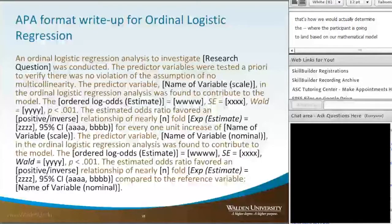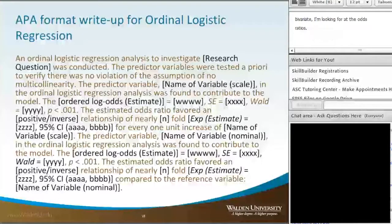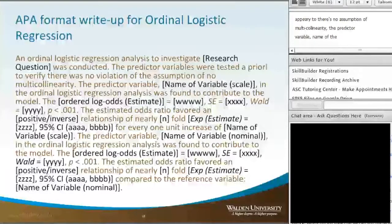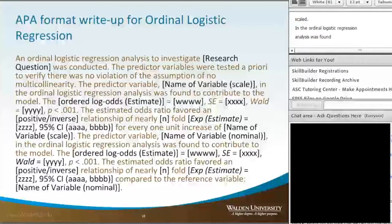Since in this particular output we're focusing more on a bivariate approach, I'm looking more at the odds ratios. Looking at this template here, we would start with: 'An ordinal logistic regression analysis to investigate our research question was conducted. The predictor variables were tested a priori to verify there was no violation of the assumption of no multicollinearity.' The predictor variable — name of the variable — and this first sentence is really for those which are scale. In the ordinal logistic regression analysis was found to contribute to the model, the ordered log odds, which is our estimate, equals WWW.